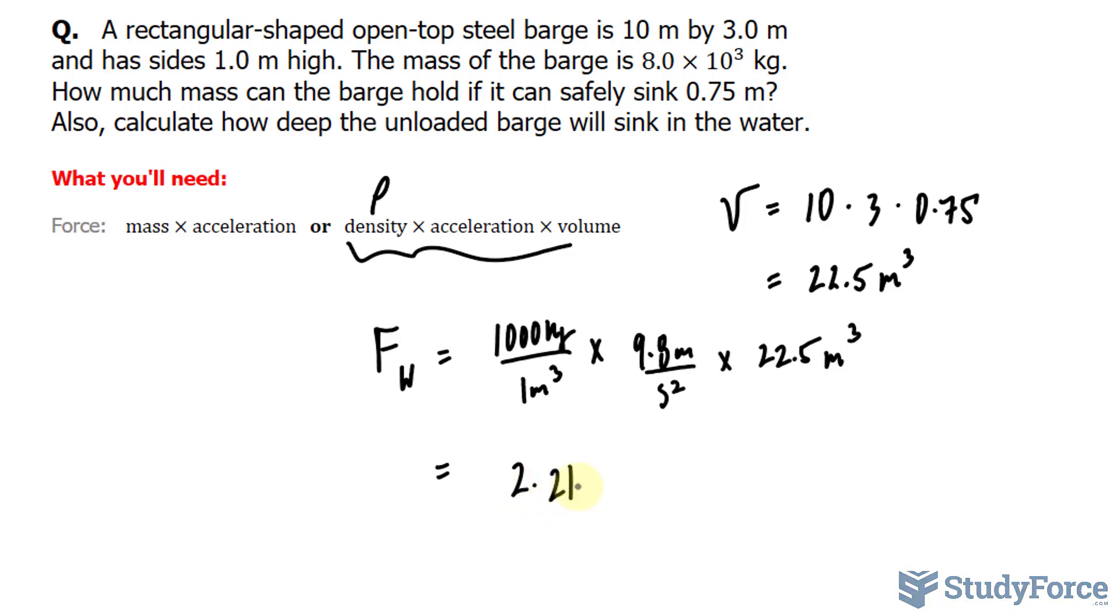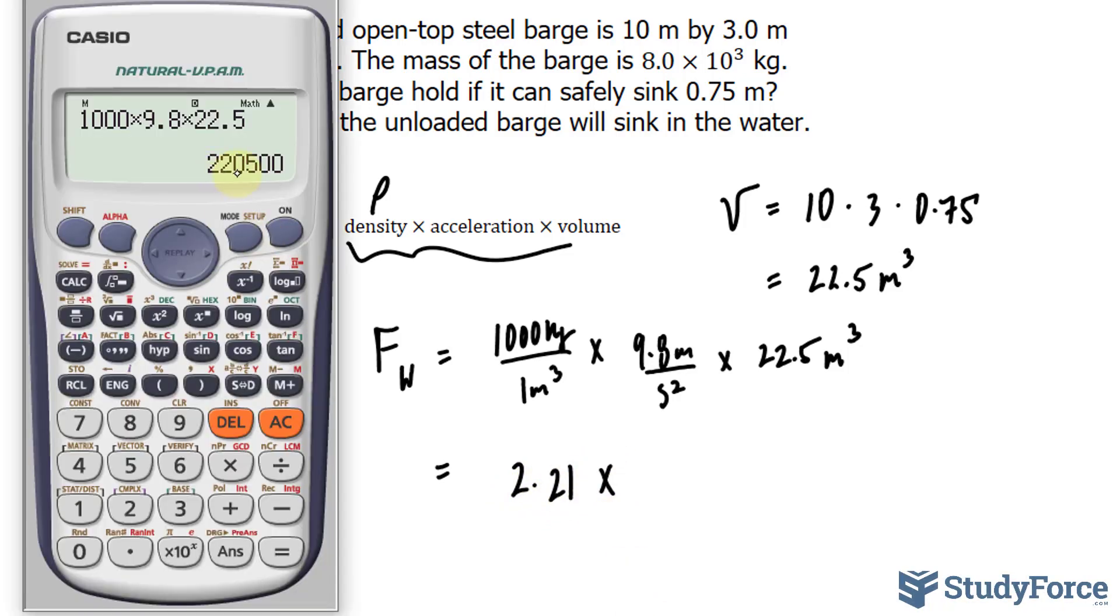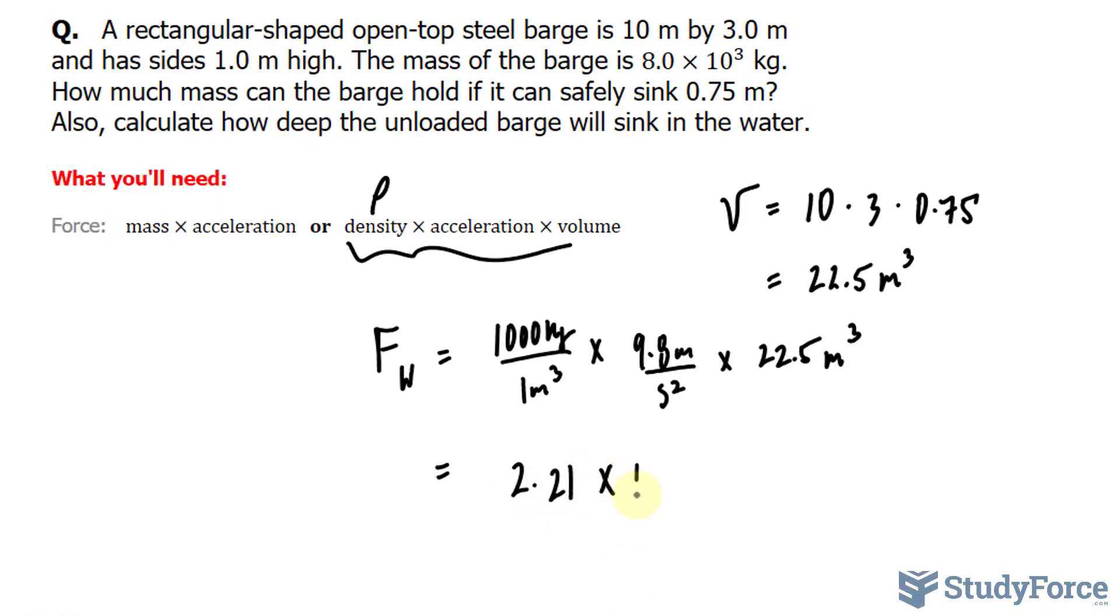So I'll write down 2.21 × 10⁵ newtons. So that's the buoyant force that the water exerts on the barge.